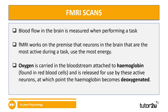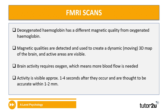Make sure you can use all these terms when describing how an fMRI works, because it is much more than somebody going into an fMRI machine. What we're actually looking for is deoxygenated blood, and that tells us that the neurons are active. Deoxygenated haemoglobin has a different magnetic quality from oxygenated haemoglobin, and those magnetic qualities are detected by fMRI scans to create a moving 3D map image of the brain. Active areas in response to the stimuli are visible on the scan. Activity is visible approximately one to four seconds after it occurs, and measurements are thought to be accurate within one to two millimeters — so good spatial resolution.